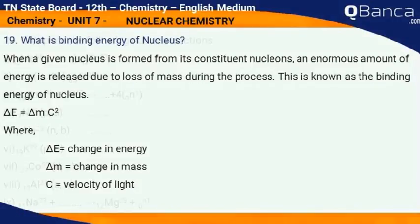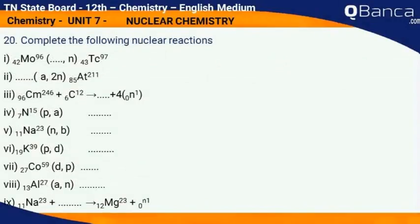Complete the following nuclear reactions: i) Mo-96-42 gives Tc-97-43; ii) a, 2n gives At-211-85; iii) Cm-246-96 plus C-12-6 gives dash plus 4 N-0-1; iv) N-15-7, proton, alpha gives; v) n, b gives K-39-19;